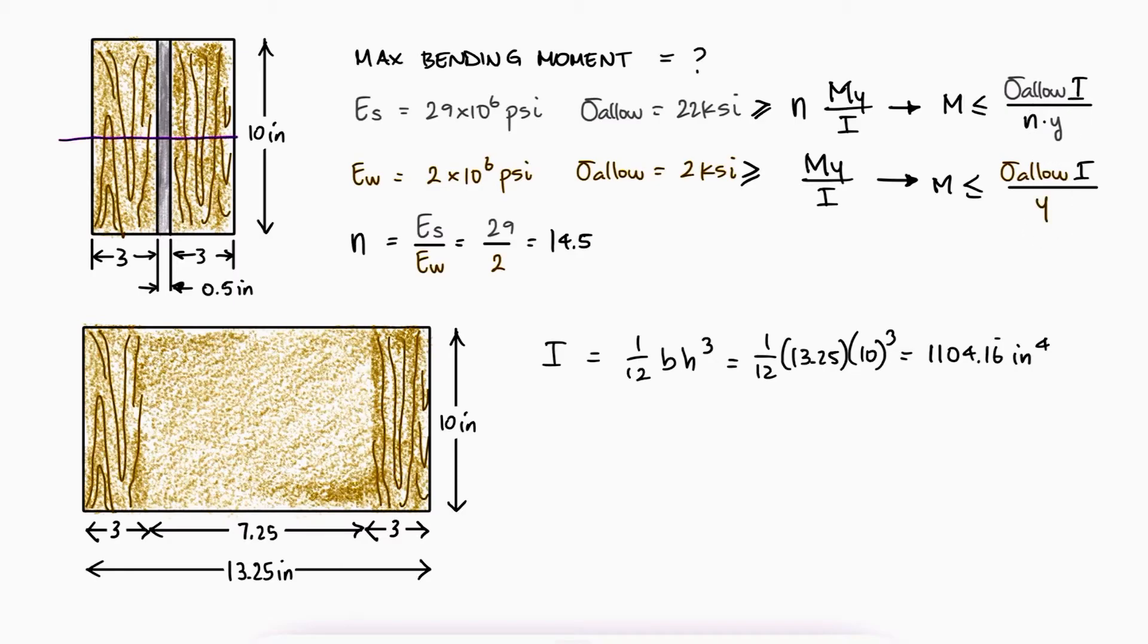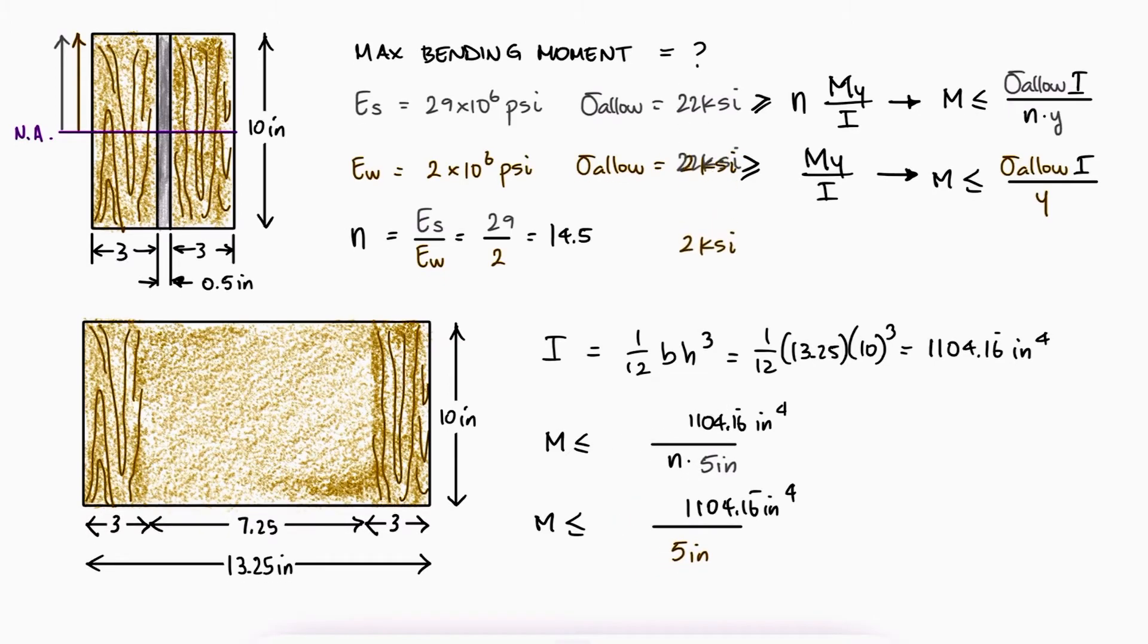The distance from the neutral axis to both the wood and the steel is the same and equal to 5 inches. The second moment of area is that for the transformed section, since n will take care of correcting the stress for the steel.